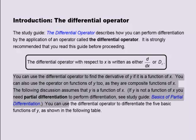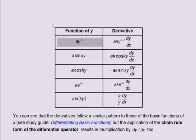You can use the Differential Operator to differentiate the five basic functions of y, as shown in the following table. If the function of y is a multiplied by y to the power n, its derivative with respect to x is a multiplied by n multiplied by y to the power n minus 1, multiplied by dy by dx. If the function of y is a multiplied by the sine of ky, its derivative is a multiplied by k multiplied by the cosine of ky, multiplied by dy by dx.